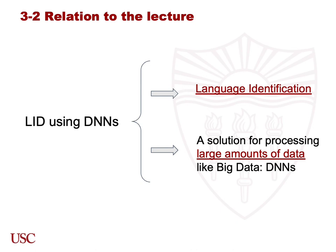As for the relation of this paper to our lecture, automatic language identification is very related to our lecture topic of language identification. It offers us an automatic way for language identification, so we can gather audio information or data more efficiently. Additionally, DNNs offer us a solution for processing large amounts of data, like what we learned before regarding big data.